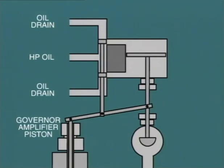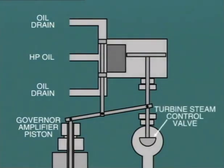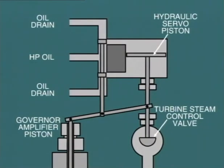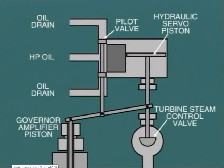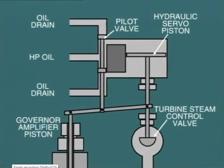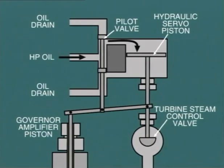In this simplified example shown here, the turbine steam control valve is adjusted by the position of the hydraulic servo piston. This large system is controlled by the small pilot valve here. Suppose the governor control system lifts the operating lever slightly. As we can see, this will now allow high-pressure oil to enter the servo cylinder above the piston.